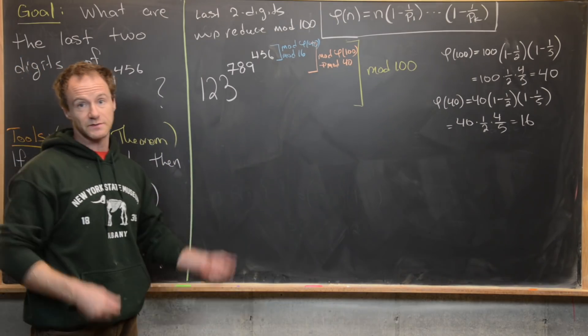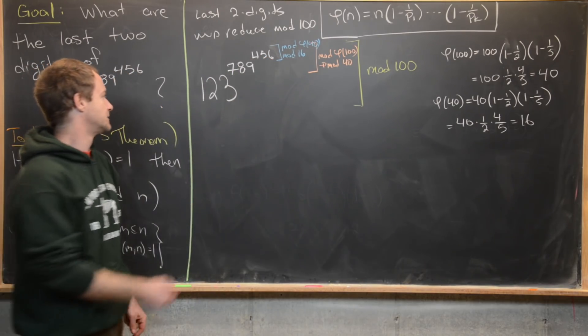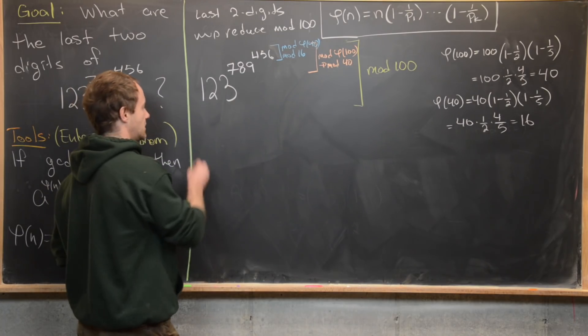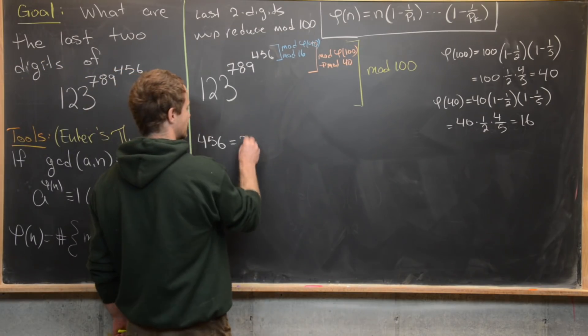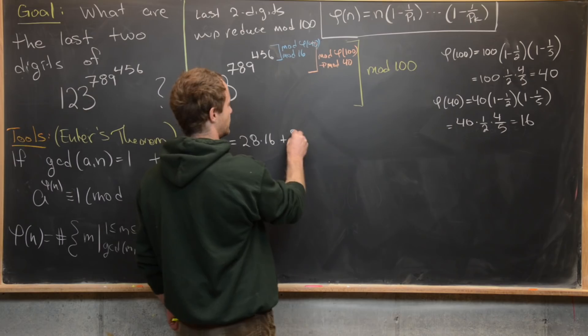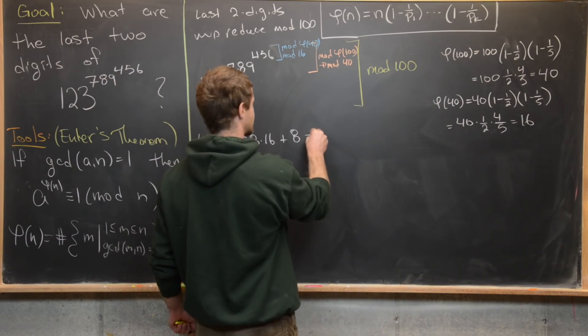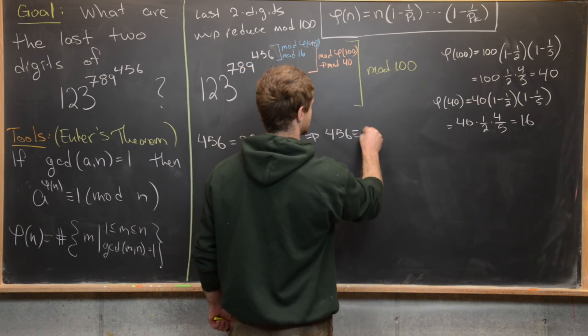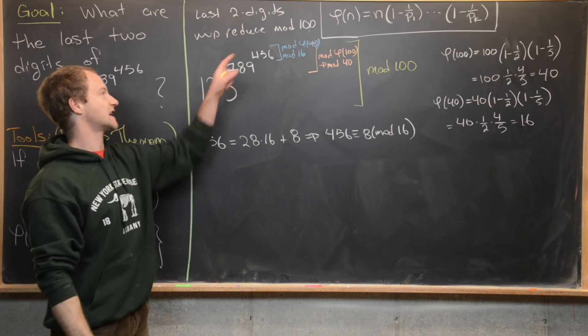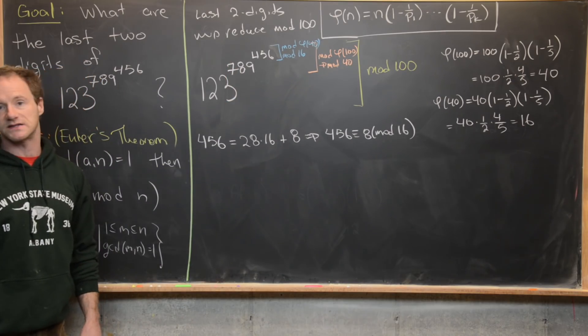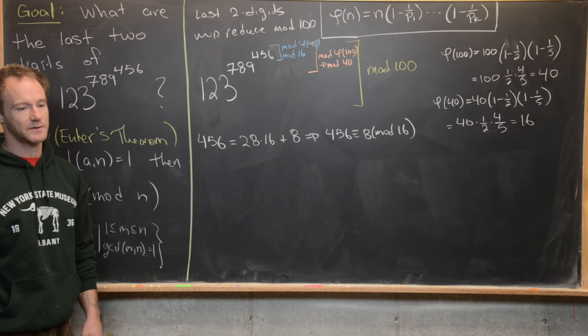Now we want to do some division problems with remainder in order to reduce from the inside out. So notice that we have 456 is equal to the following. So that's equal to 28 times 16 plus eight. So that's just easy division with remainder. So what that tells us is that 456 is congruent to eight mod 16, which is a really important fact, because this exponent in the exponent is working mod 16. So we may as well replace this 456 with eight, which is what we'll do in the next step.